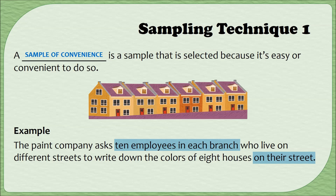However, this isn't necessarily a very good sample because just because I work in Boston or San Diego doesn't mean that I live in those cities. So if the company is only interested in those particular cities, they're going to get information that's not necessarily about those cities. These are things to think about when conducting a sample: am I representing the population appropriately?